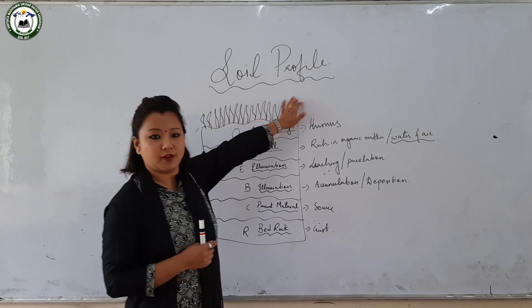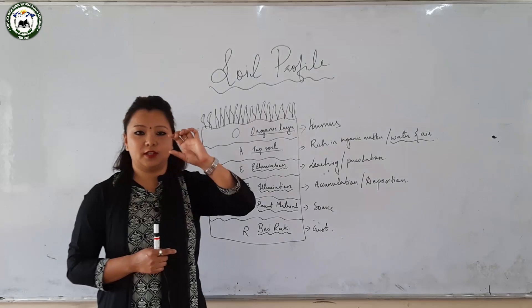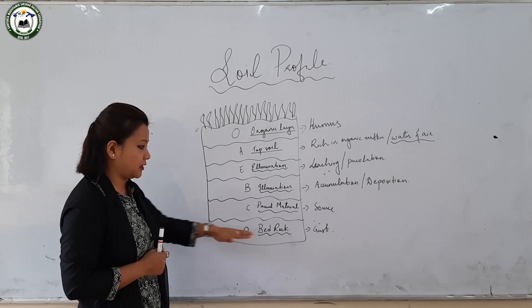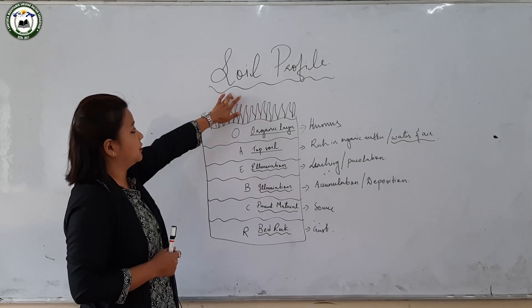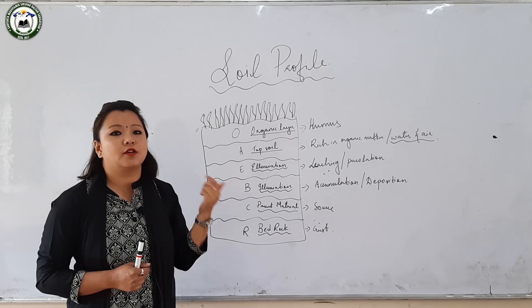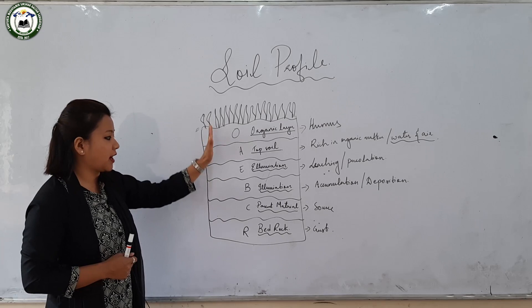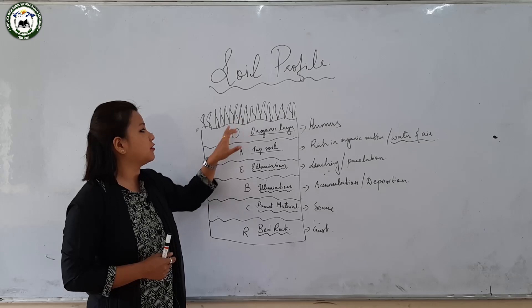Before moving into soil genesis, it is very important to know about the soil profile. Soil profile is a vertical section of the layers of the soil which has developed over a longer period of time. It develops from the earth's surface downwards until it reaches the bedrock or crustal part. The concept of soil profile was developed by the famous Russian soil scientist V.V. Dokuchaev. A well-developed soil profile has six horizons.